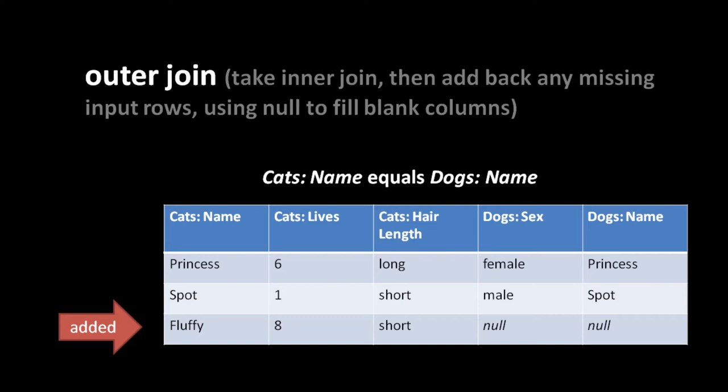The outer join does this because our original tables had three cats - Fluffy, Spot, and Princess - and our dogs table had two dogs - Princess and Spot. Both dogs were included in the inner join result, so the outer join doesn't need to add them back in. But the cat Fluffy was missing from the inner join, so the outer join adds it back in - matched up against null values in the dogs table columns.